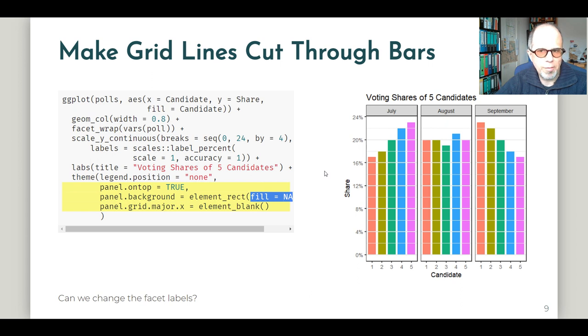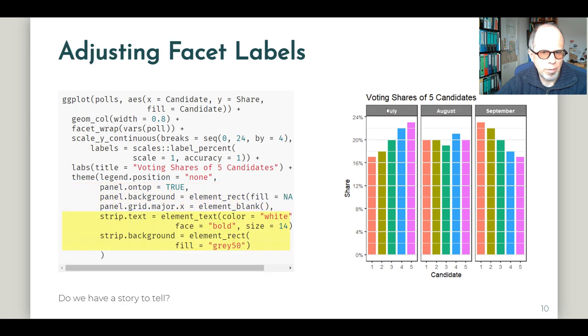Can we do something about the facet labels? This is more of a visual improvement and not so much about readability. But I wanted to show you that as well. I'm moving back and forth between these two plots. You see that the facet labels that hold the strips that hold the months in which the polls were carried out, July, August and September were changed a little bit. So I increased contrast, used a darker gray and changed font color to white and set font face to bold. So it's all parameters in the theme function, strip.text and strip.background correspond to these facet labels.